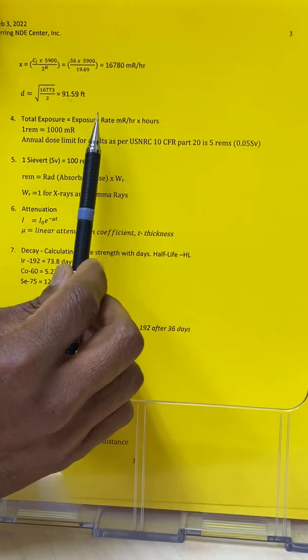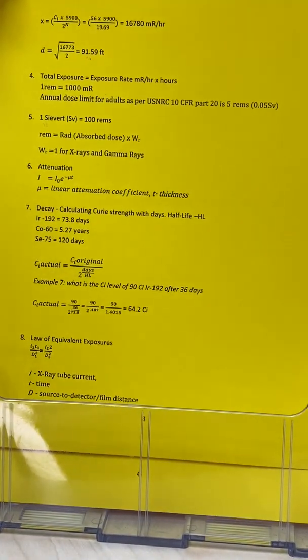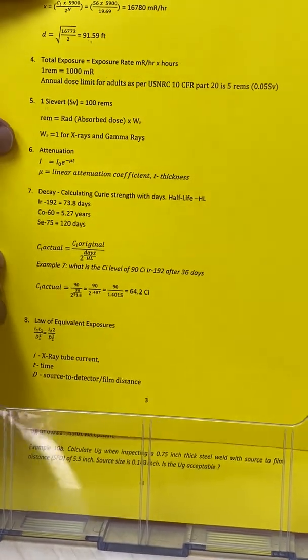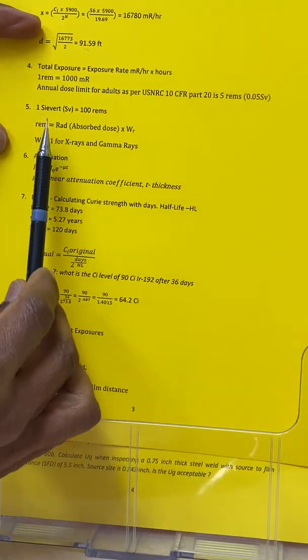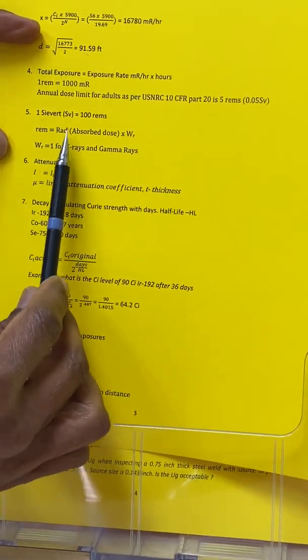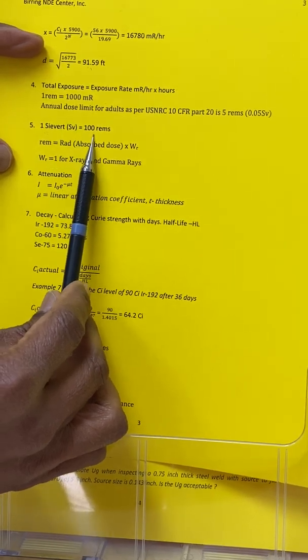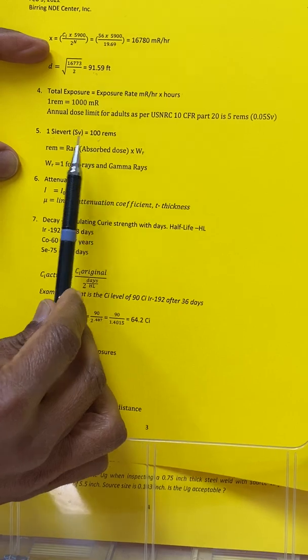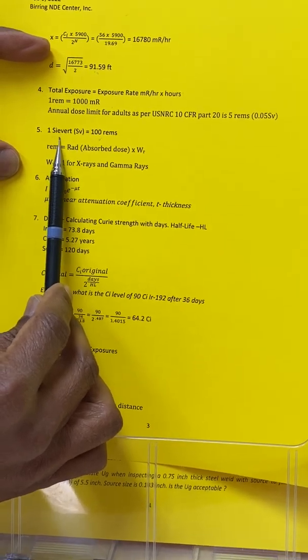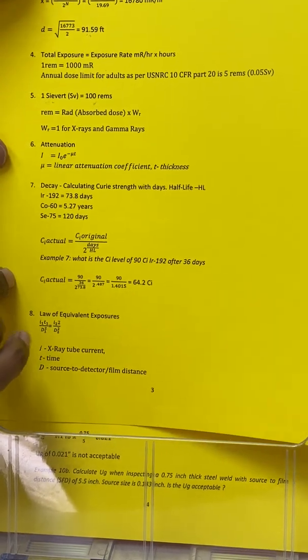When you're doing radiography, that makes a huge difference for barricading the area. This is simple: what is the R and mR relationship? One R equals 1,000 mR. Sievert is an SI unit, and one Sievert equals to 100 rem, which is a lot of radiation. One Sievert of radiation is actually deadly. This is a formula for attenuation—linear attenuation across any thickness T.